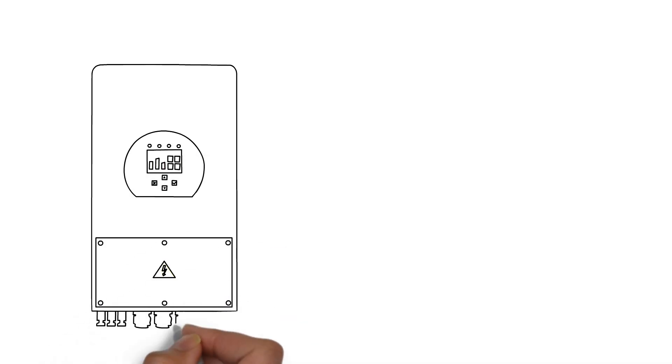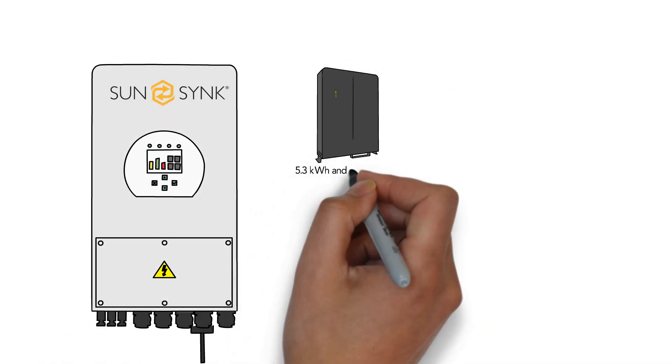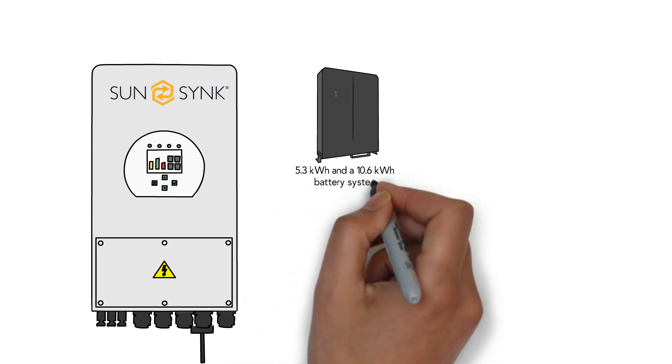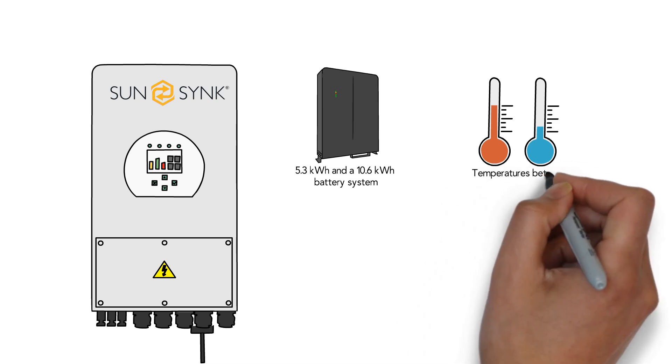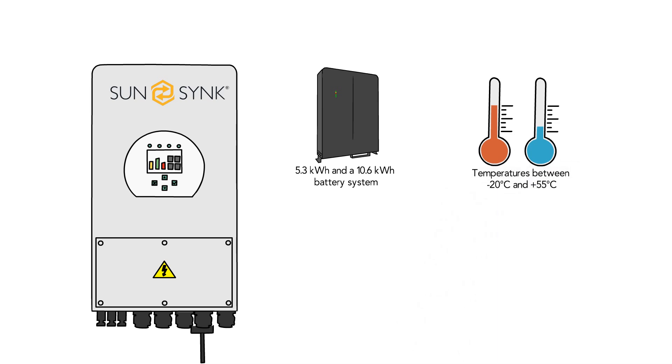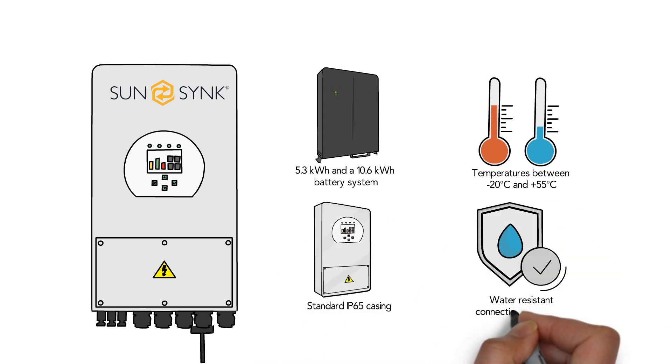The new sun sink lithium phosphate W series offers a choice of a 5.3 kilowatt hour and a 10.6 kilowatt hour battery system. Each unit is designed to withstand temperatures between minus 20 degrees Celsius and 55 degrees Celsius with a standard IP65 casing, water-resistant connections and ports.